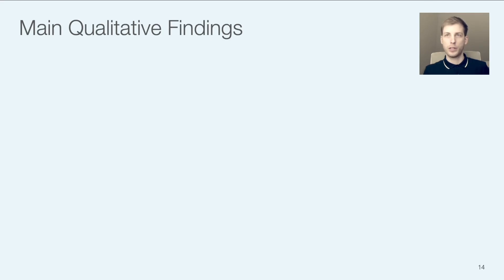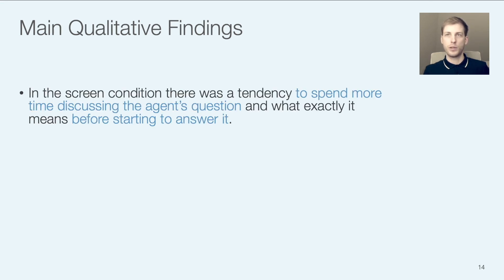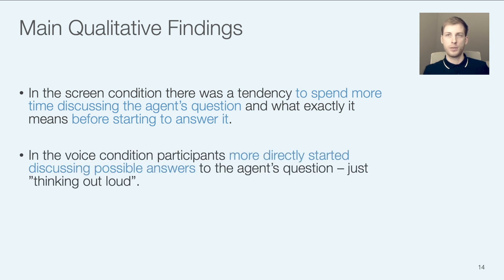Now to our main qualitative findings. One key finding was that in the screen condition, there was a tendency to spend more time making sense of the agent's question and what exactly it means before participants start discussing possible answers. In the voice condition, on the other hand, participants more directly start discussing possible answers to the agent's question as if they are thinking out loud. One main reason for this could be that if the system speaks with participants, they just feel more compelled to answer directly, like they would when another human conversation partner asks them a question. In the screen condition, users may feel less compelled, since the system does not actively intervene in the conversation.